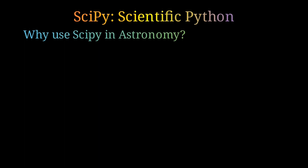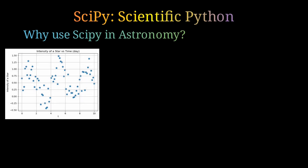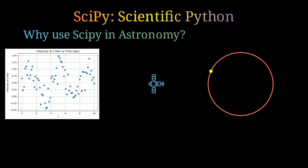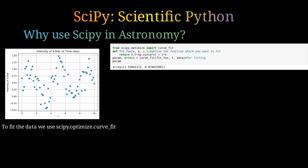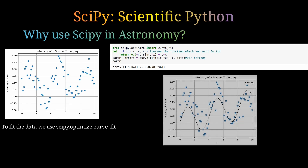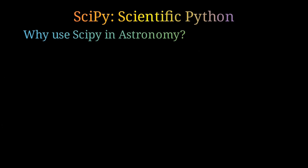Let's look at one example: intensity versus time data for a particular star system. Imagine a star and a satellite — as the star moves closer, intensity increases, and as it moves away, intensity decreases. If I want to find the time period of this star system, I use curve fitting in SciPy to fit a curve to the data. You can fit any type of function, and the result gives us the frequency — in this case 1.5 — which is indeed correct. It is very powerful.